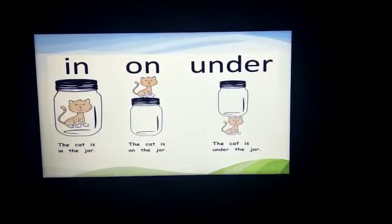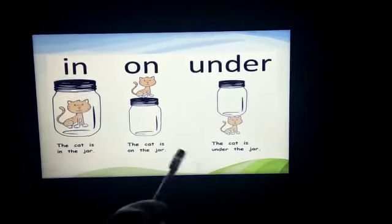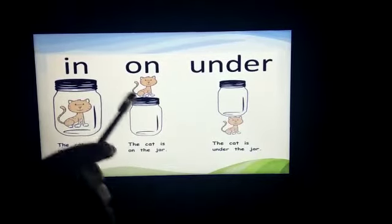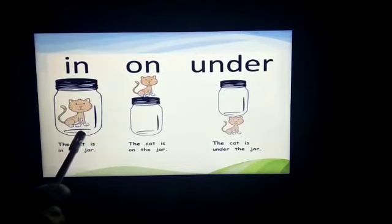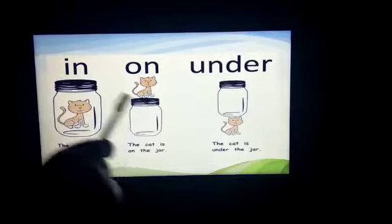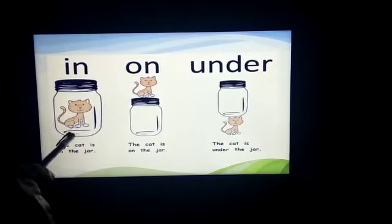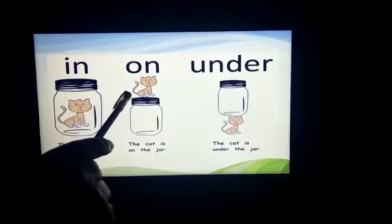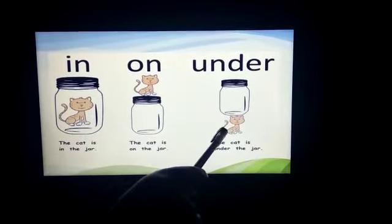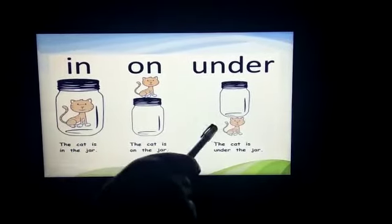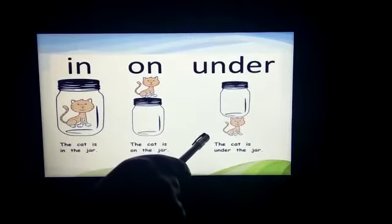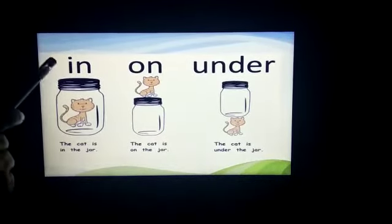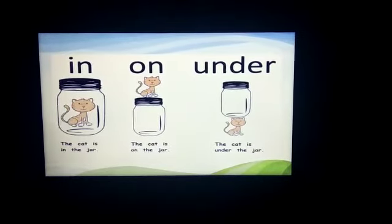Now let us understand with an example. Here is a picture. There are three jars — one, two and three — and three cats. In three pictures, you can see the different position of the cat. In the first picture, you can see the cat inside the jar. On the second picture, the cat is on the jar. On the third picture, the cat is under the jar. In each picture, the position of the cat is changed. The first one is 'in'. In means inside. The cat is inside the jar.